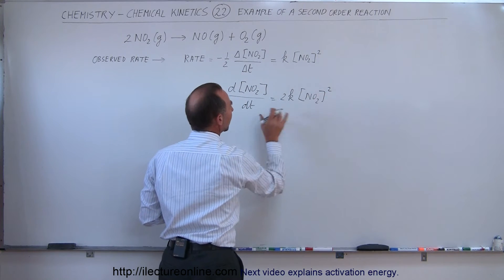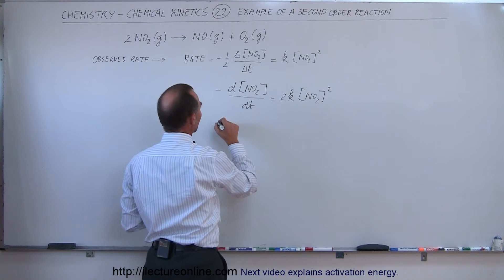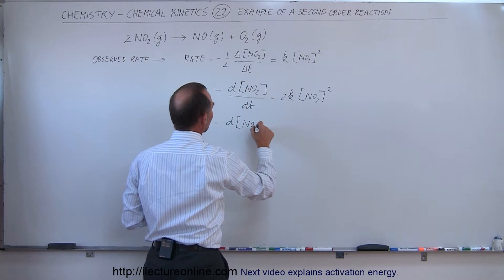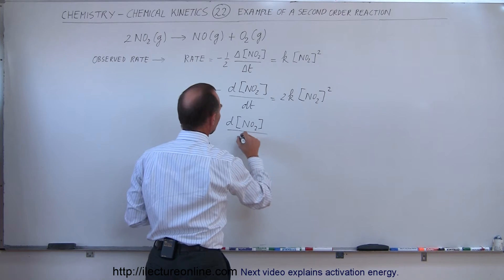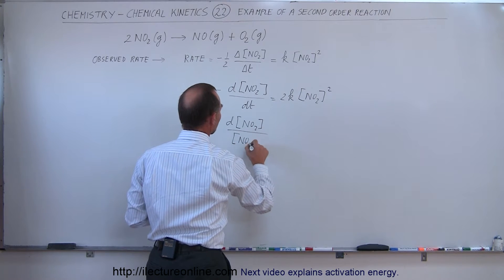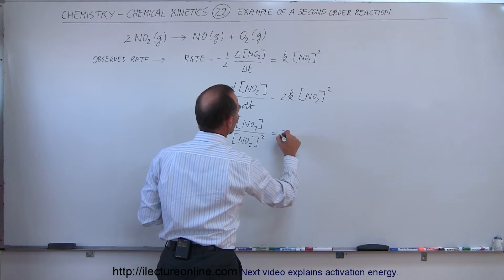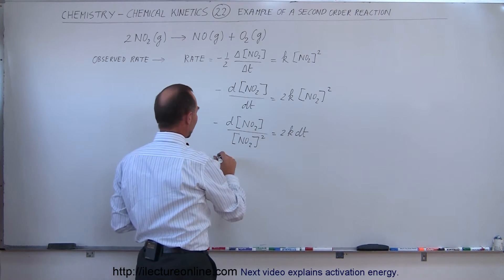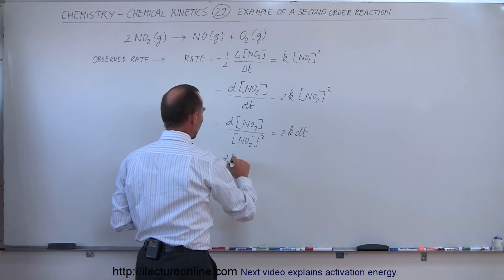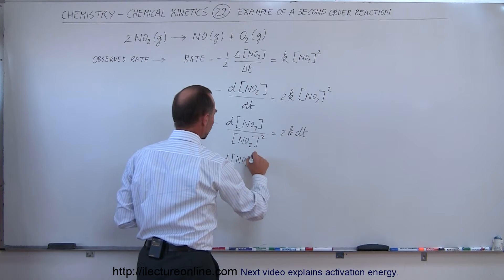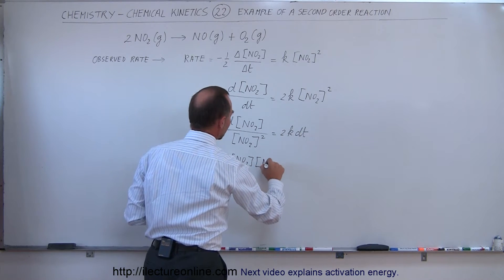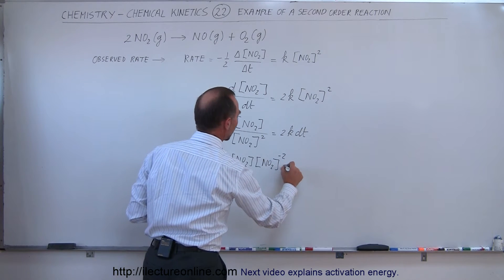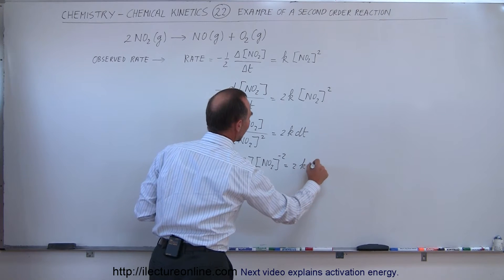Now we move dt over and nitrogen dioxide squared down, so this can be written as: minus the change in nitrogen dioxide divided by the nitrogen dioxide concentration squared equals 2k times dt. This can also be written as the change in nitrogen dioxide concentration times the concentration of nitrogen dioxide to the minus two power, which equals 2k times dt.